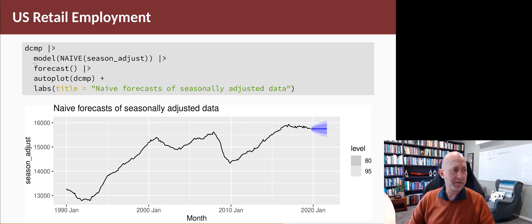We take the decomposition and plug that into the model function using naive to model season_adjust. Then we can forecast—we'll get forecasts that look like this, with a point forecast equal to the most recent observed value of the seasonally adjusted data with some prediction intervals around it.